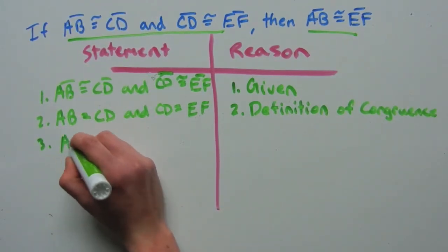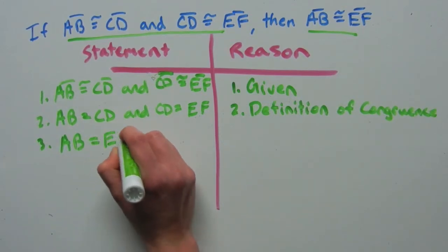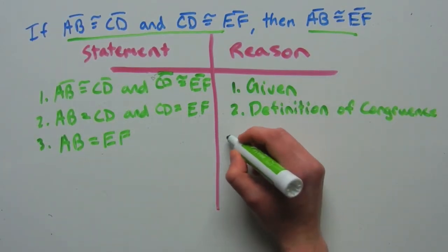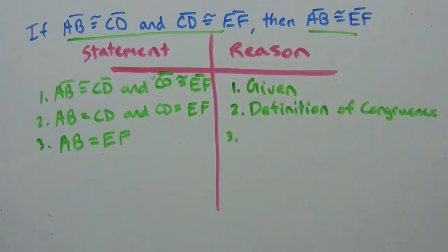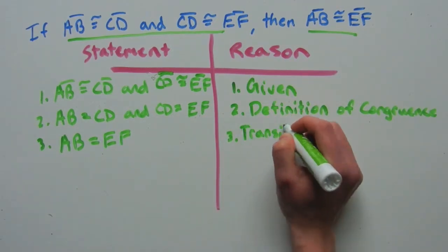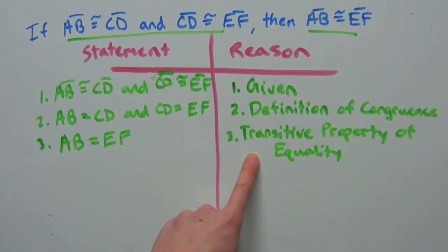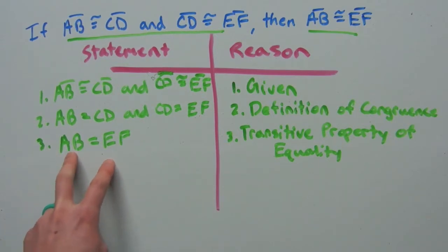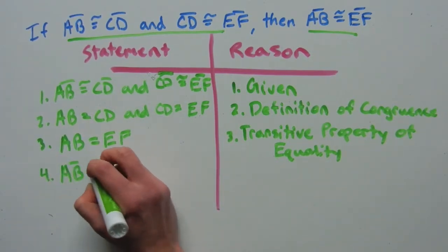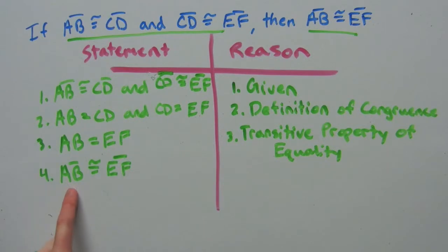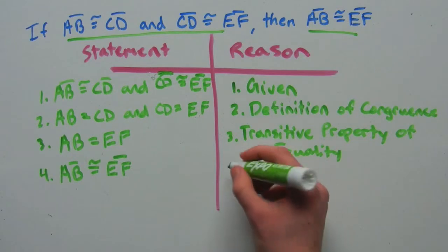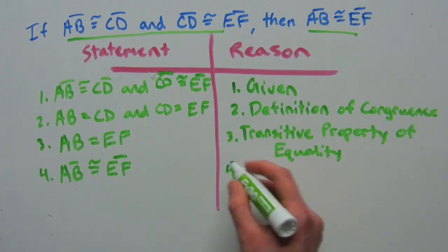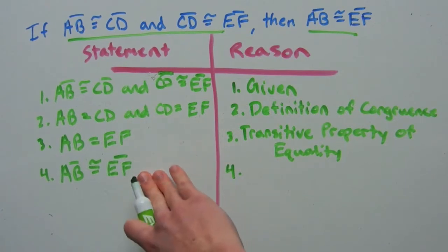Step three: we can say that AB is equal to EF, and that's because of the transitive property of equality — that property was established when we dealt with real numbers. So now we're saying that the measure AB is equal to the measure EF. From there, step four: segment AB is congruent to segment EF, and that is because of the definition of congruence — we're able to take two segments that are equal and say they are congruent.